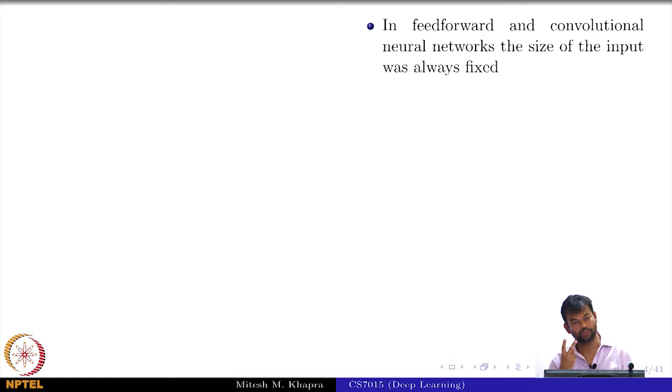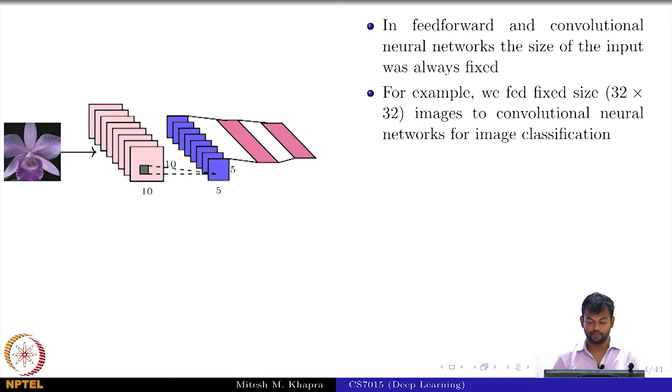So far we have dealt with two types of networks - feedforward neural networks and convolutional neural networks. In both these networks, the input was always of a fixed size. For example, if you take a convolutional neural network, you are feeding 32×32 images to it or 227×227 images. The size was always fixed - all your training images and test images were always scaled or cropped to this particular size.